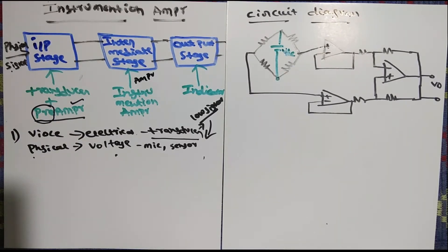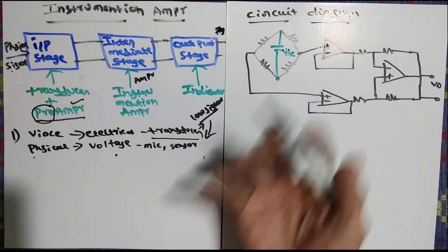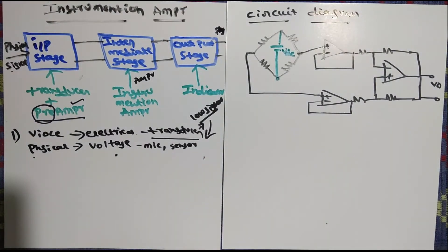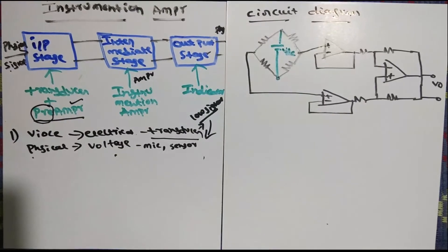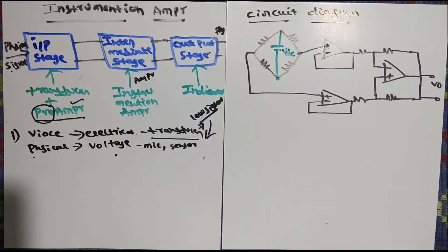Once amplification is done, we cannot keep the signal in electrical format only — voltage or current is not understandable by users. It has to be given back in physical format. So we use some indicator, display, or output device. That is the output stage. The whole concept: physical input → electrical conversion → multi-stage amplification → convert back to physical output.